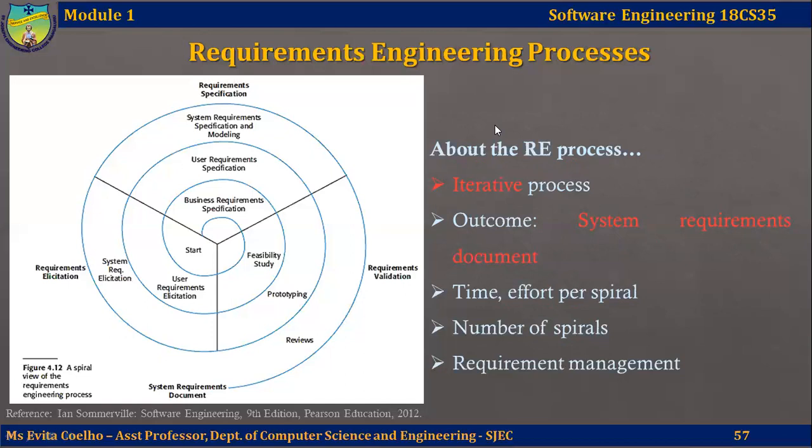Requirements elicitation is a completely human-centered activity — you sit and talk to the customer to understand their requirements. After an initial feasibility study, the next stage is requirements elicitation, where software engineers work with customers and system end users to find out about the application domain, what services the system should provide, the required performance of the system, hardware constraints, timing constraints, budgetary constraints, and so on.